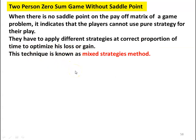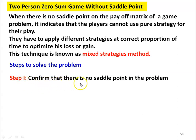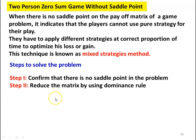In the matrix method, they will be using three strategies at the correct proportion of time so that gain or loss will be optimum. The steps to solve the problem without saddle point: first, we have to confirm that there is no saddle point. We search for the saddle point by finding the minimax and maximin values and prove that there is no saddle point. Then we reduce the matrix using the dominance rule.